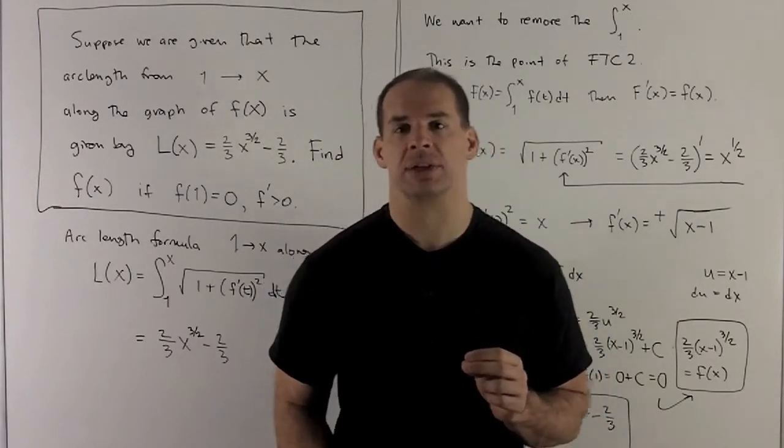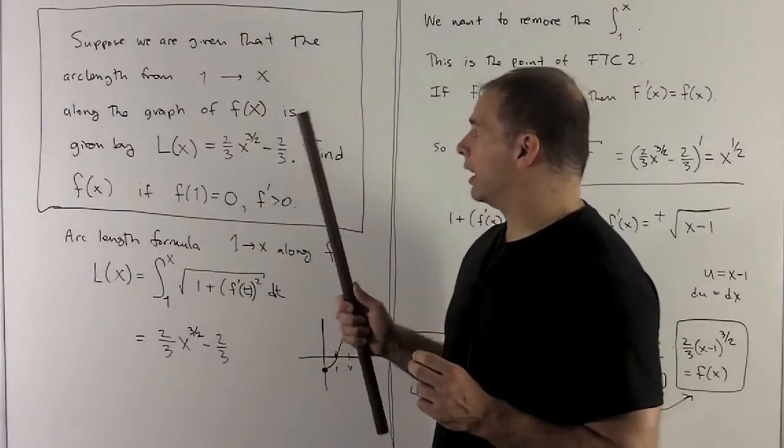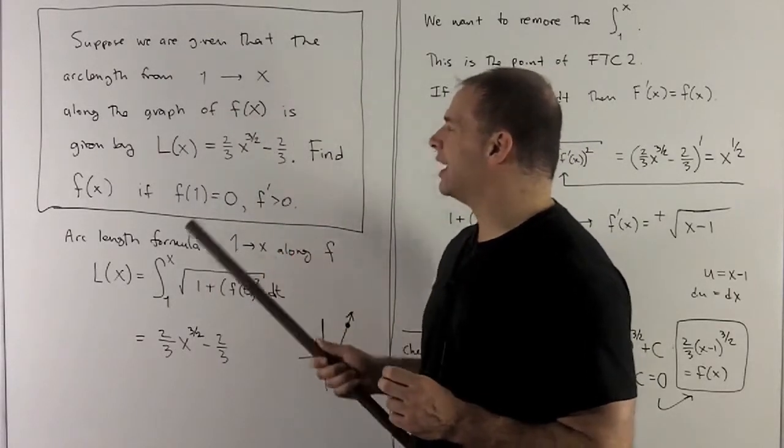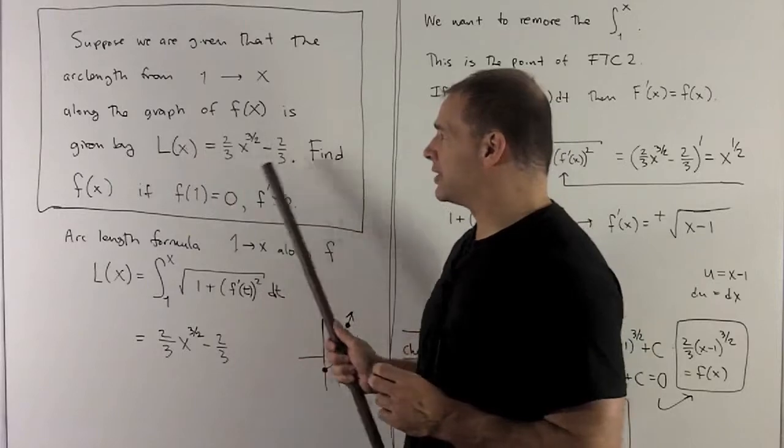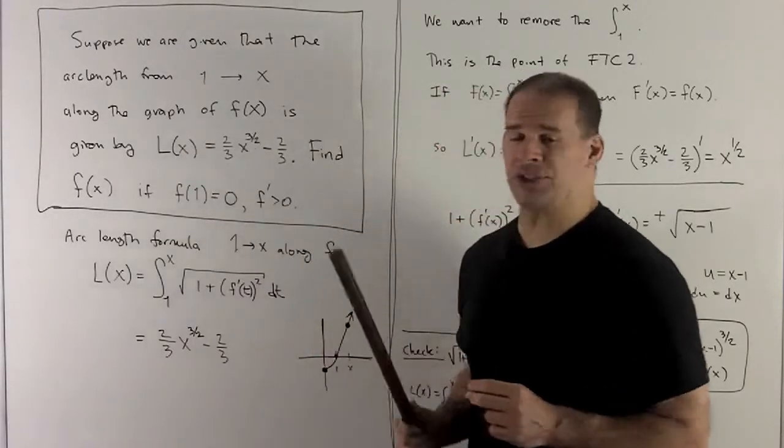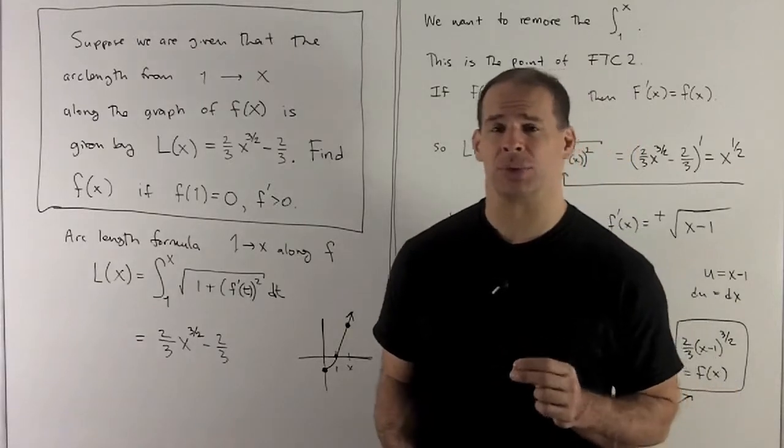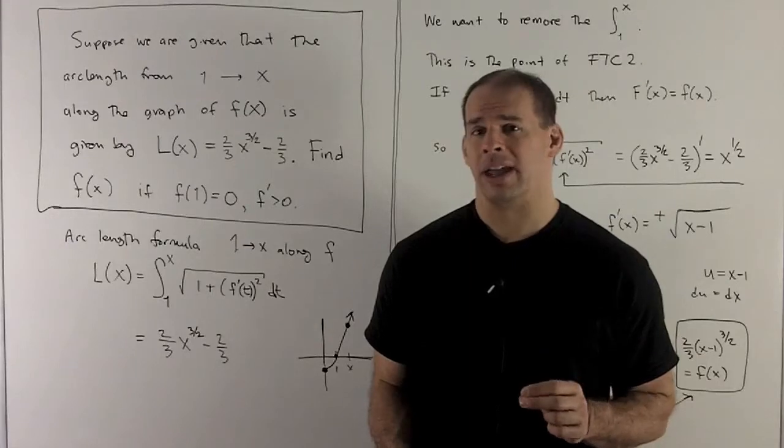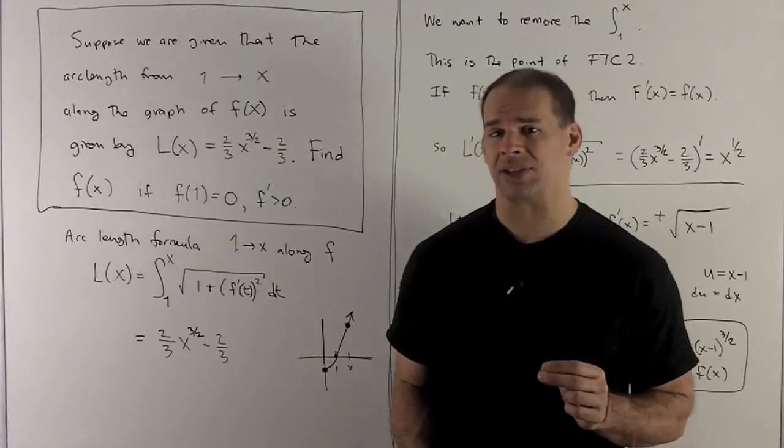The problem looks something like this. Suppose we're given the graph of f(x), we're going to go from 1 to x, and then there's a function that's attached to this which gives the arc length, which will be given by 2/3 x^(3/2) - 2/3. I want to find f(x), given that f(1) = 0, and that the derivative of f is always positive.